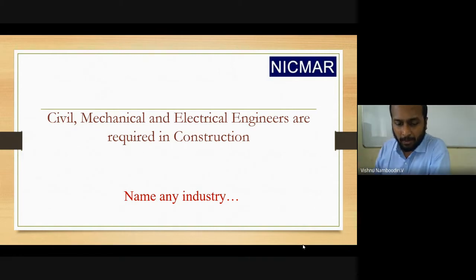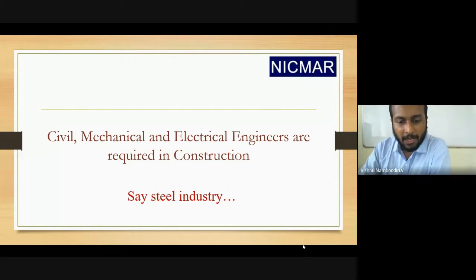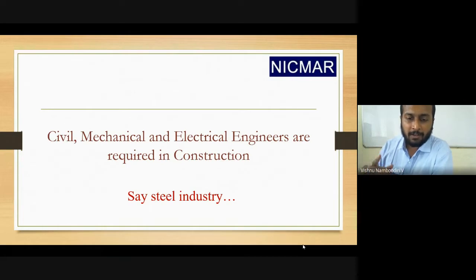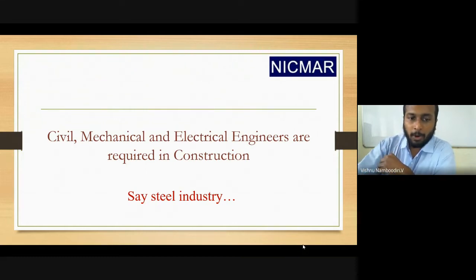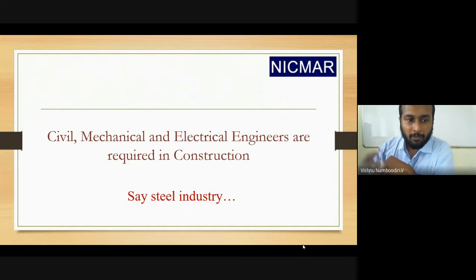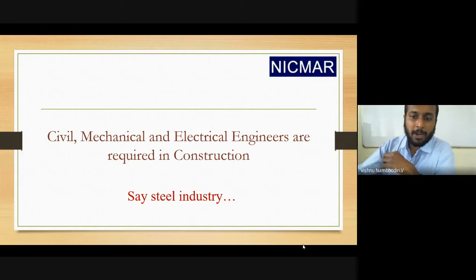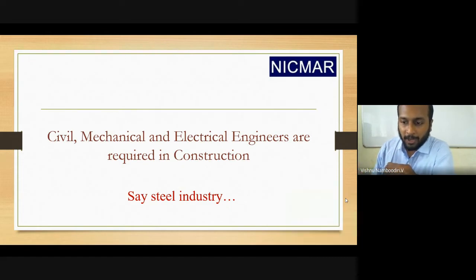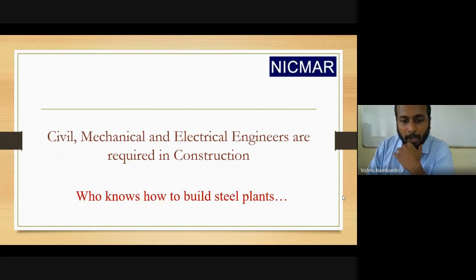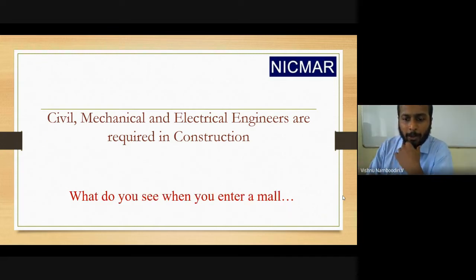Civil engineers are needed to construct structures and foundations for equipment, and electrical engineers provide power supply and manage all electrical aspects. All three need to come together to build a steel plant. Take a common project like a mall — civil structures alone don't make the mall. The centralized air conditioning is built by mechanical engineers, and lighting and power systems require electrical engineers.